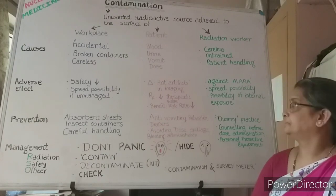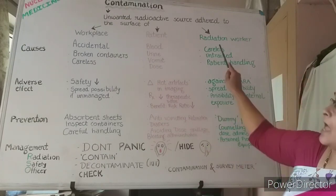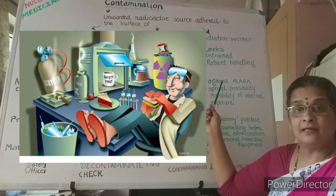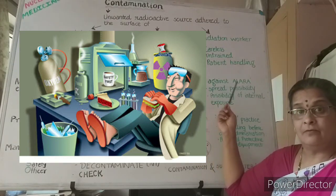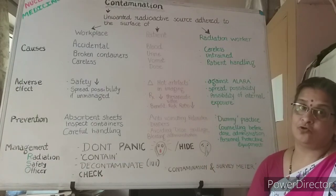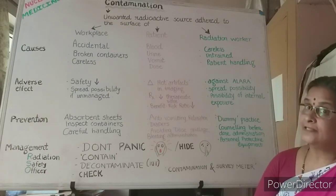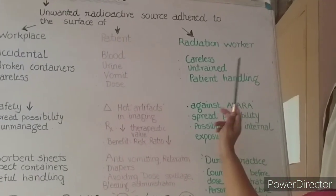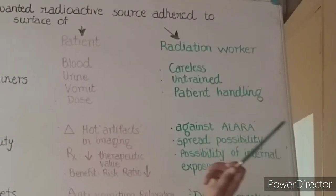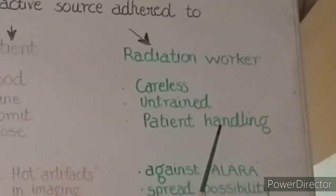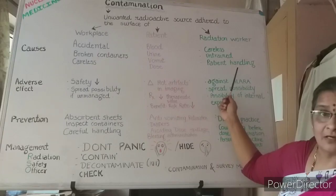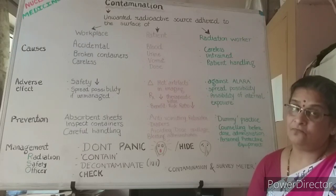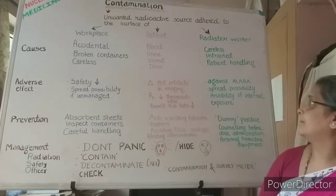As for the radiation worker, careless handling can cause the radiation worker to get contaminated as well — not only will he contaminate the workplace but also get radioactivity stuck to his own body surface. This is also a cause of contamination of the radiation worker.